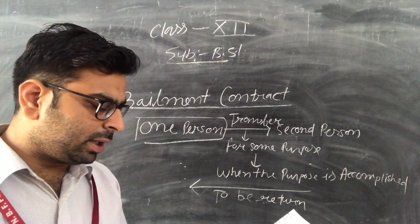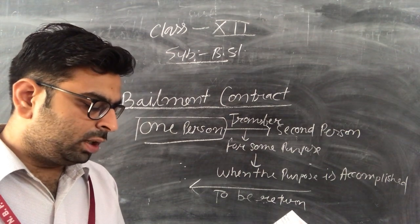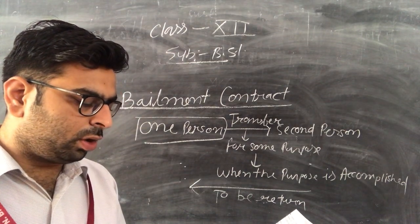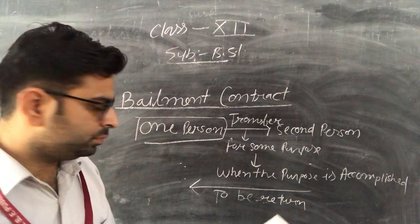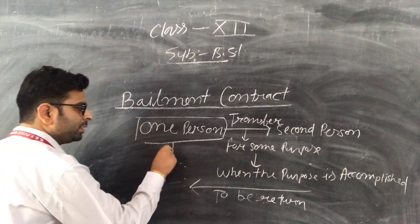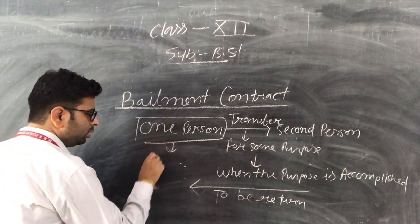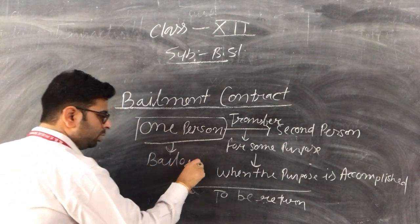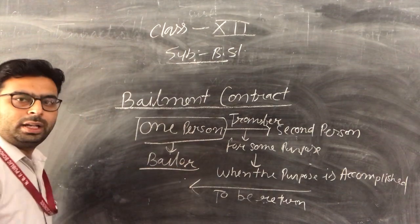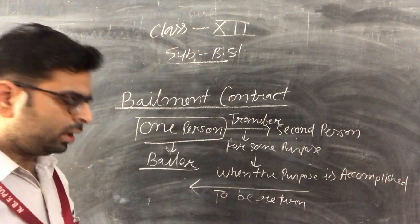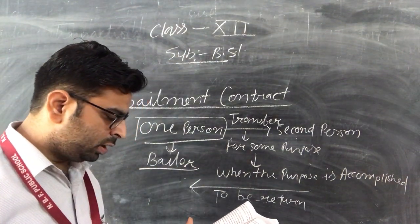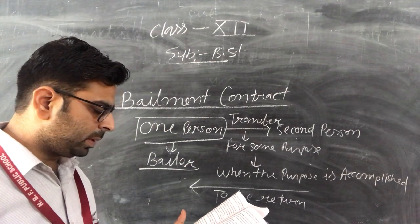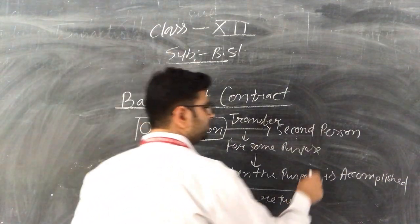Next are the bailor and bailee. The person who delivers his goods is called the bailor. And the person to whom the goods are delivered for a specific purpose is known as the bailee.